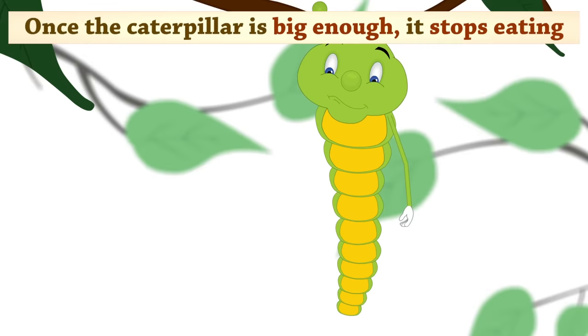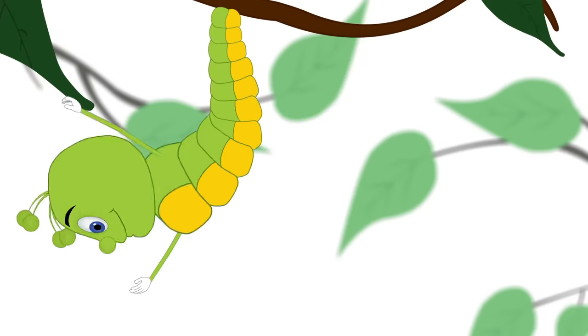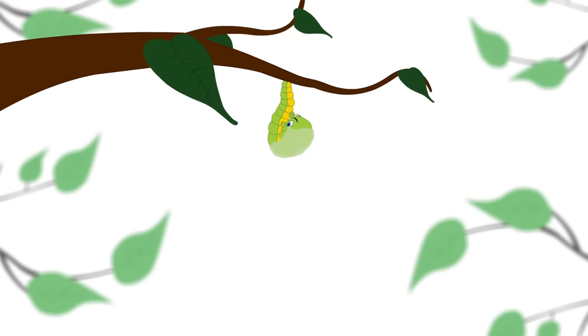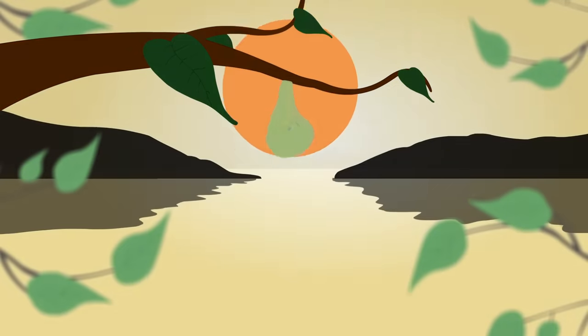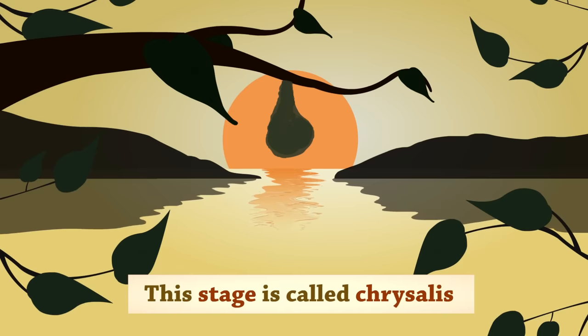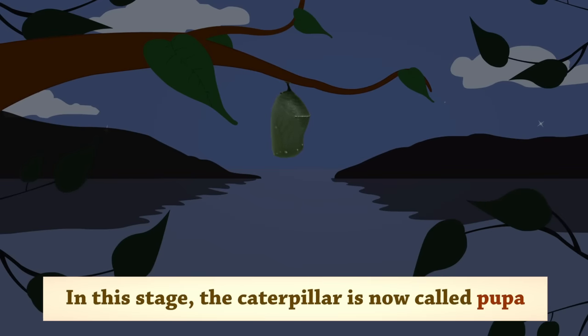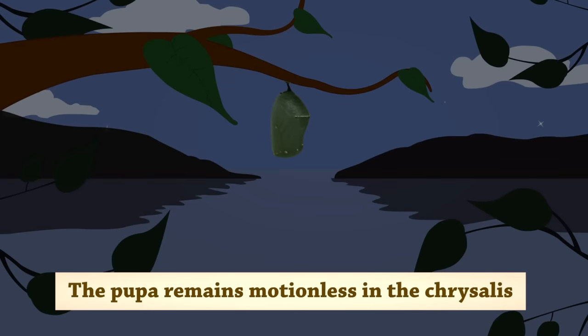Once the caterpillar is big enough, it stops eating. It then forms a protective layer around itself. This stage is called chrysalis. In this stage, the caterpillar is now called pupa. The pupa remains motionless in the chrysalis.